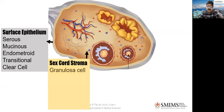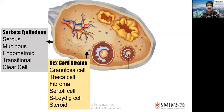Then comes sex cord stroma. The cells there: granular cells give granulosa cell tumors, theca cells give theca cell tumors, fibrous tissue and connective tissue give fibromas. There are also Sertoli cell and Leydig cells, and finally steroid-producing cells giving steroid-type tumors.